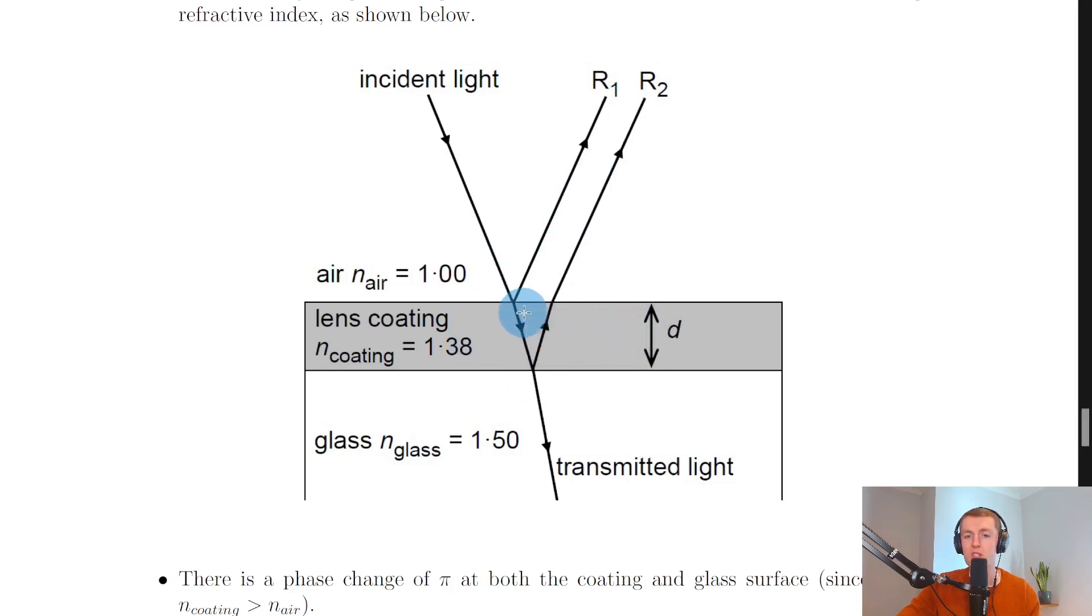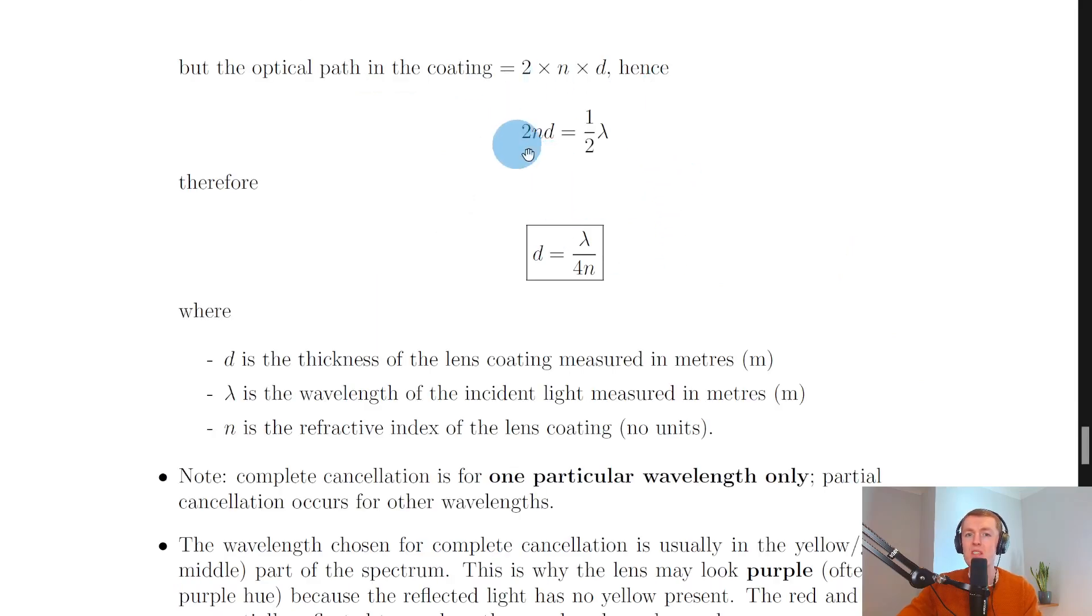So ray R2 is going to travel down this distance d and then back up this distance d again. So we can say it's two times n for the refractive index of the coating times d for the distance, the thickness. And that is the only difference in distance traveled between R1 and R2. So that is our optical path difference, 2n_coating times d. So going back to here, we can see that optical path difference 2nd is equal to half a wavelength for destructive interference.